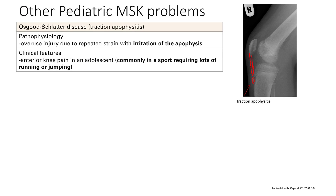Because of overuse of that knee, the tendon pulls too much on the bone. You get inflammation and it kind of pulls off a little bit. This is seen in an adolescent with anterior knee pain — pain in the front of the knee. Usually this kid is playing sports that require a lot of running or jumping, like basketball. That's Osgood-Schlatter disease. It's pretty commonly seen, so know this one.